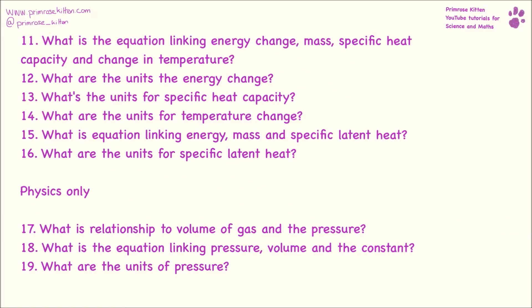What is the equation linking energy change, mass, specific heat capacity, and change in temperature? This is a slightly tricky one because there's quite a lot of bits involved, but: change in energy equals mass times specific heat capacity times change in temperature. Energy change is measured in joules. Specific heat capacity is measured in joules per kilogram degrees C.